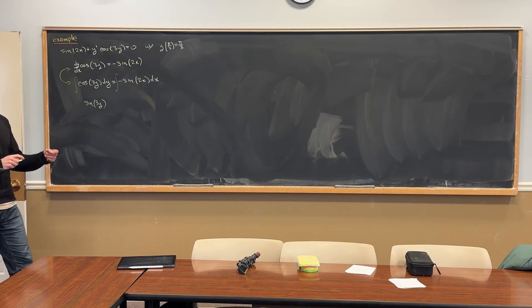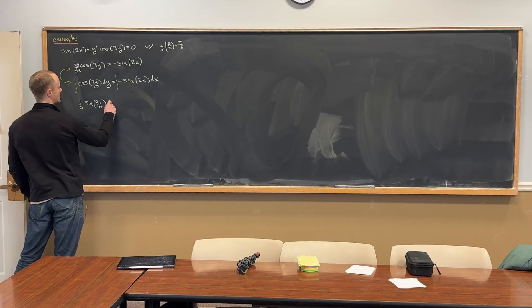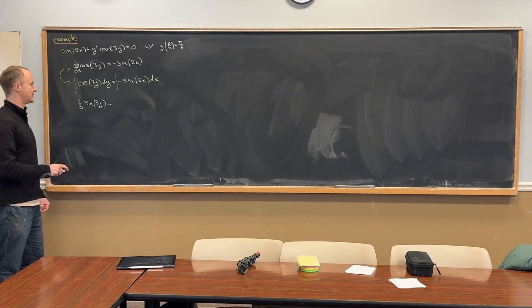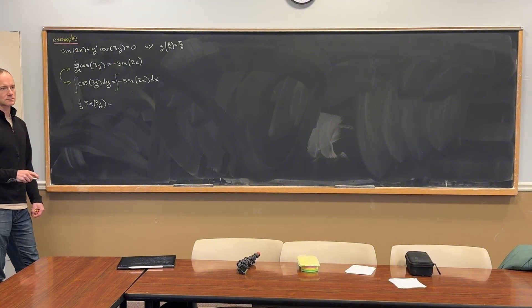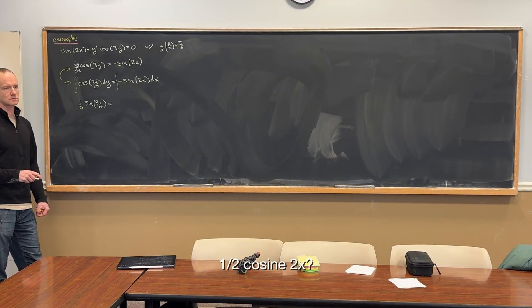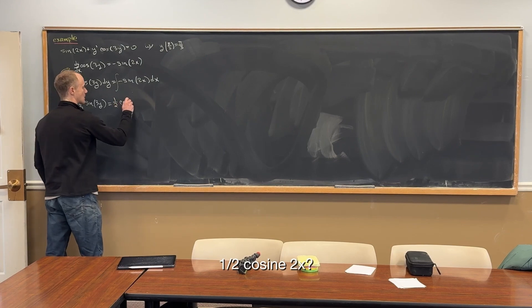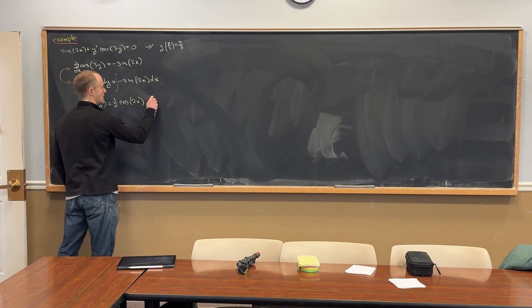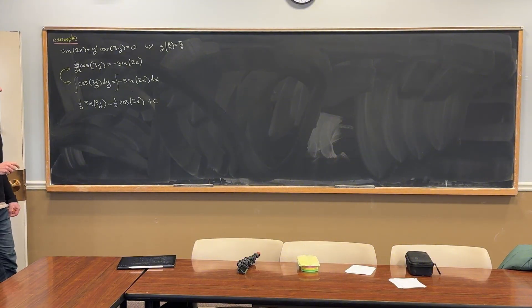And then what's the antiderivative of negative sine 2x? Good, one half cosine of 2x plus a constant c. We got to put the constant somewhere, right? We might as well put it on the x part. It doesn't really matter.